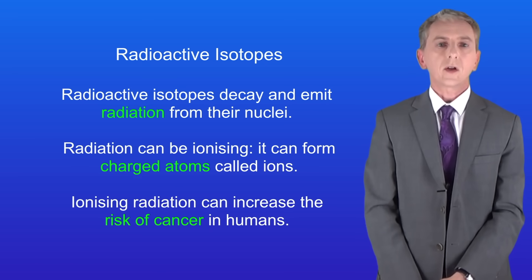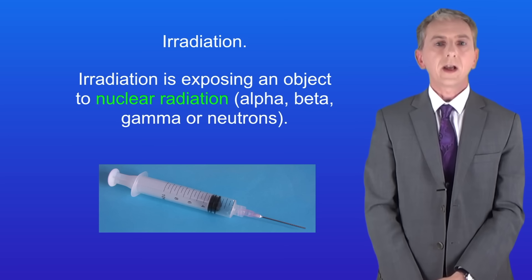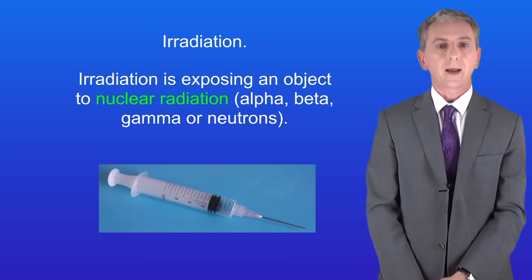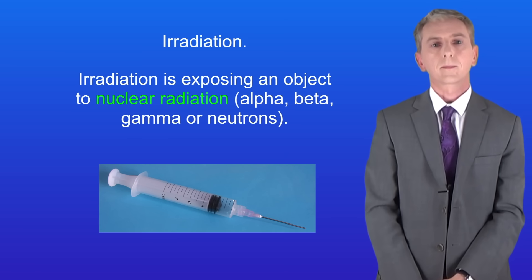So we're going to start by looking at irradiation. Irradiation is exposing an object to nuclear radiation — for example alpha, beta or gamma radiation or neutrons.